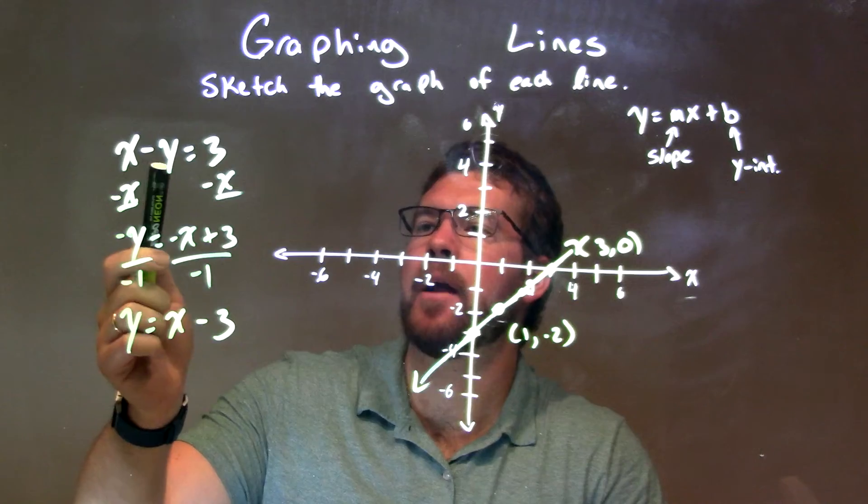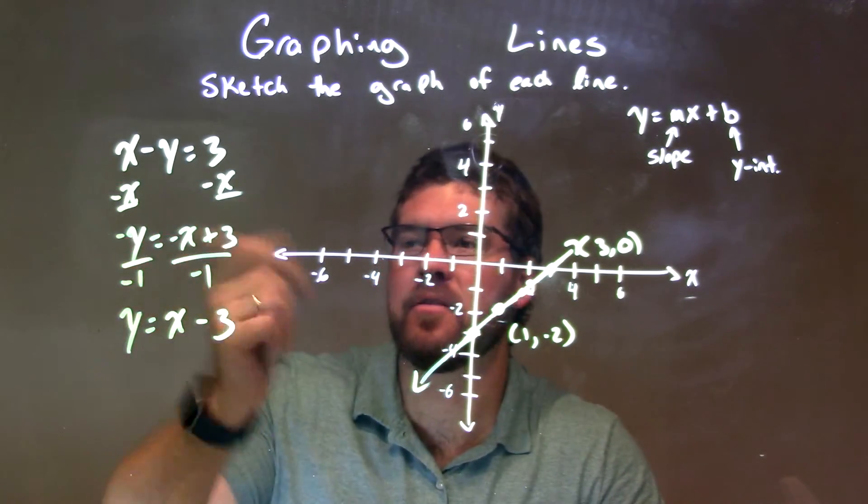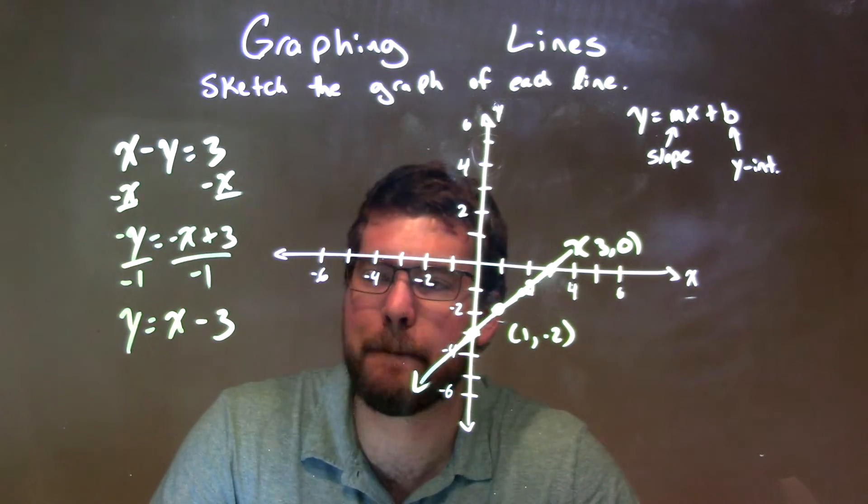Let's recap. We're given x minus y equals 3, and you get y by itself. So I subtracted x to both sides, divided by negative 1, and got y equals positive x minus 3.